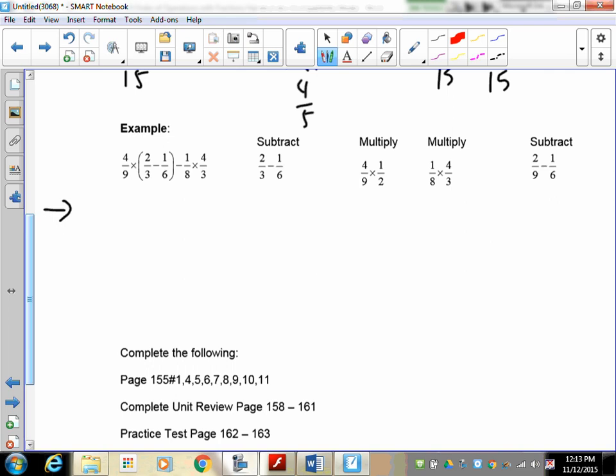All right, brackets come first. So 2/3 take away 1/6. Common denominator is going to be 18, three times six. So two times six is twelve, three times one is three, and that gives you twelve take away three over eighteen. Twelve take away three is nine over eighteen, which gives you one over two. So the brackets answer is 1/2. I haven't done anything else yet, so this has to be included.